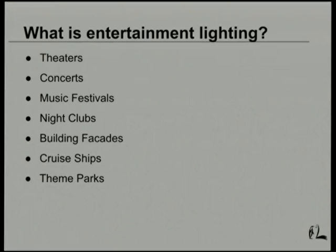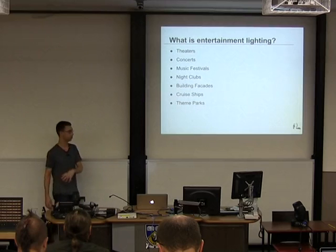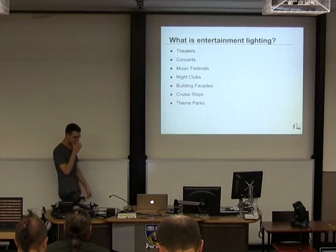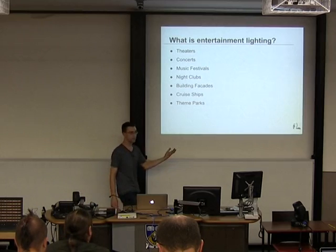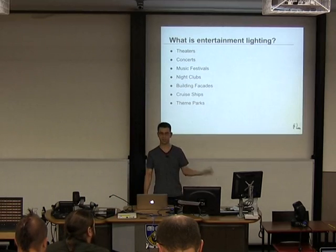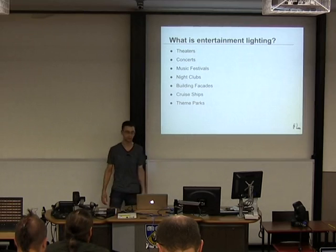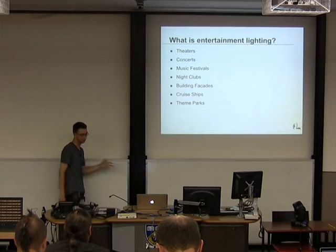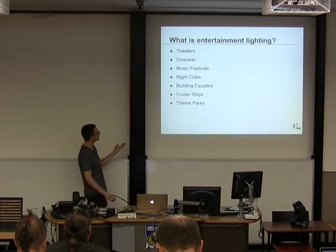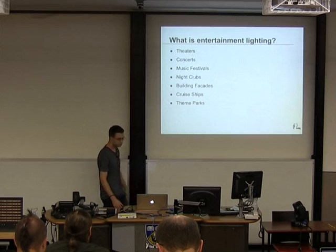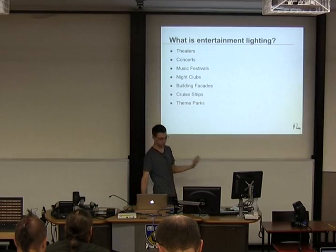Entertainment lighting, on the other hand, is the type of lighting you'll find in venues like restaurants, clubs, theaters, scaling up to stadiums, theme parks, and cruise ships. The lights are normally very dynamic — turning on and off, changing color, changing pattern, and moving around at the same time. It's much more visually appealing to look at. Of course, because of this, it requires a control system.